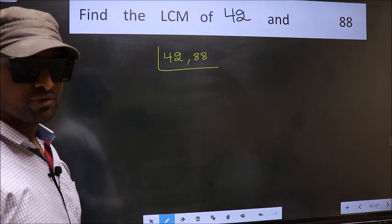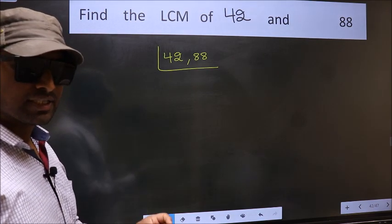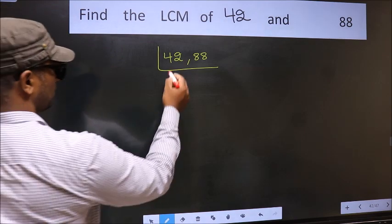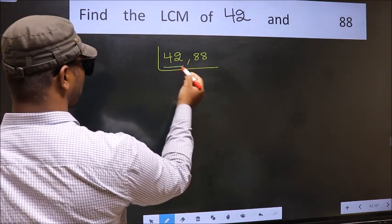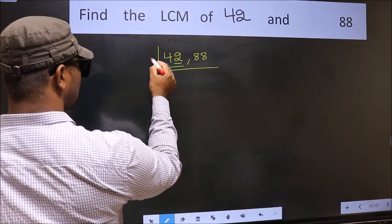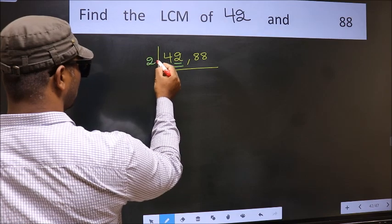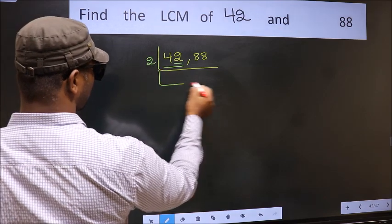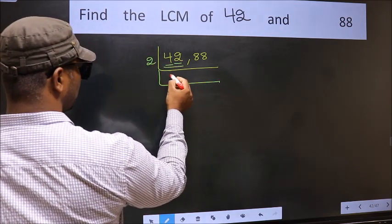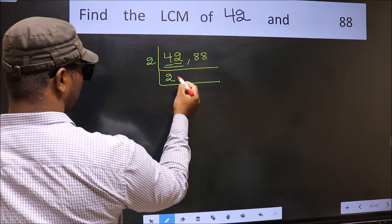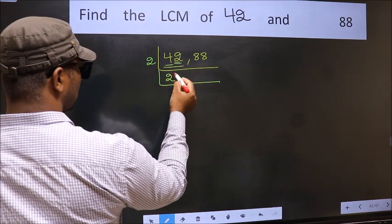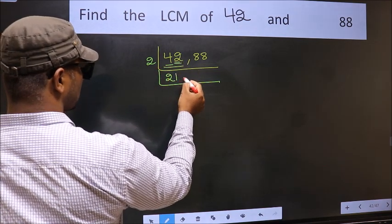Now you should focus on the first number, which is 42. The last digit is 2, so take 2. The first number is 4 — when do we get 4 in the 2 times table? 2 twos are 4. The other number is 2 — when do we get 2 in the 2 times table? 2 ones are 2.